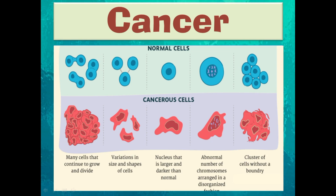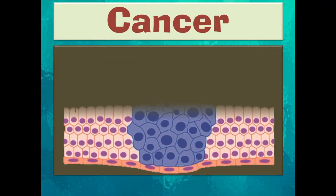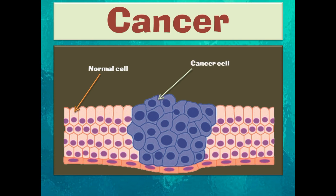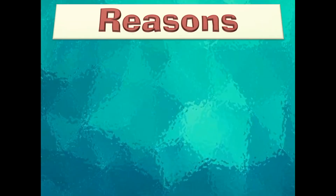This uncontrolled division of cells, which spreads from one part of the body to another, is known as cancer. You can see an array of normal cells and a cluster of cancerous cells — these cancerous cells together are known as tumors. Some tumors spread from one part of the body to another, which is very dangerous and causes the cancer to spread easily.